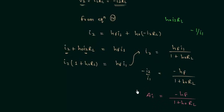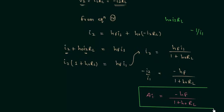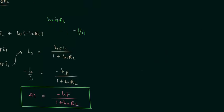This is the expression for the current gain, and this expression is true for all three transistor configurations: the common base configuration, common emitter configuration, and the common collector configuration.